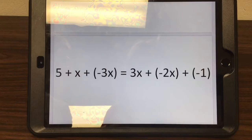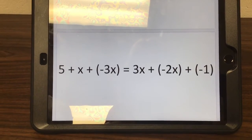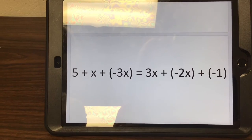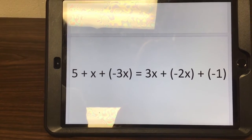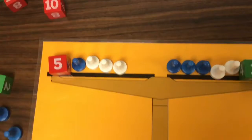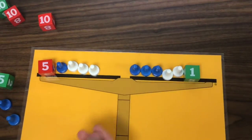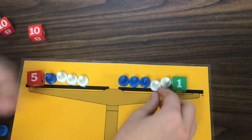The next problem is 5 plus x plus negative 3x equals 3x plus negative 2x plus negative 1. So I have a problem, and what you would do first is you would do the legal move.